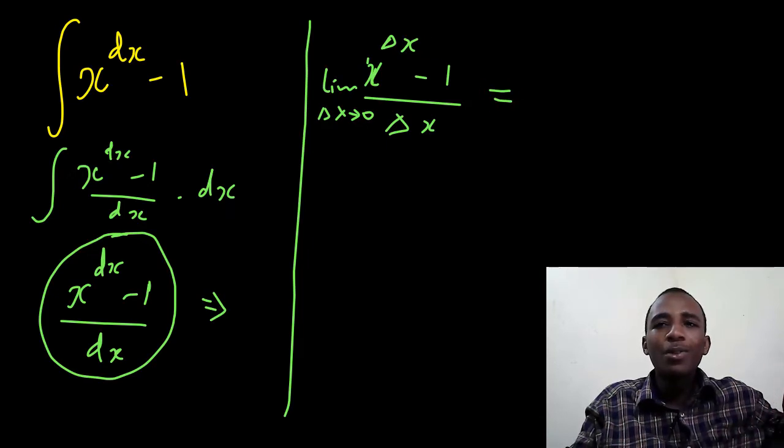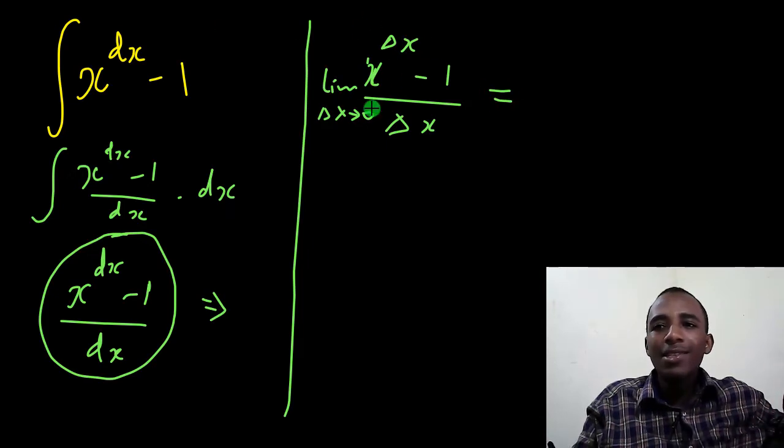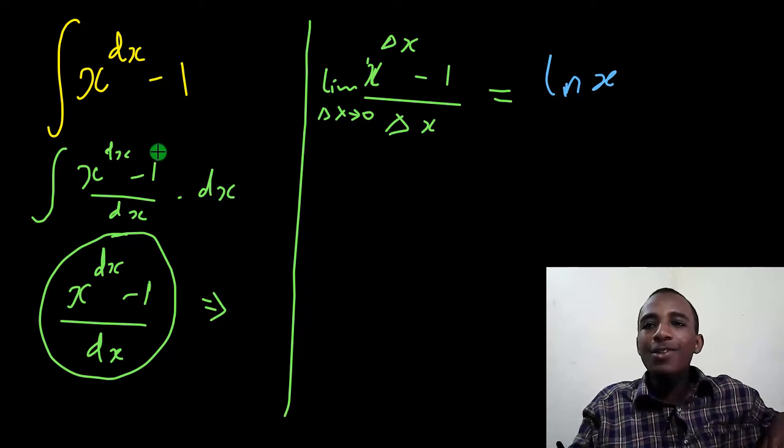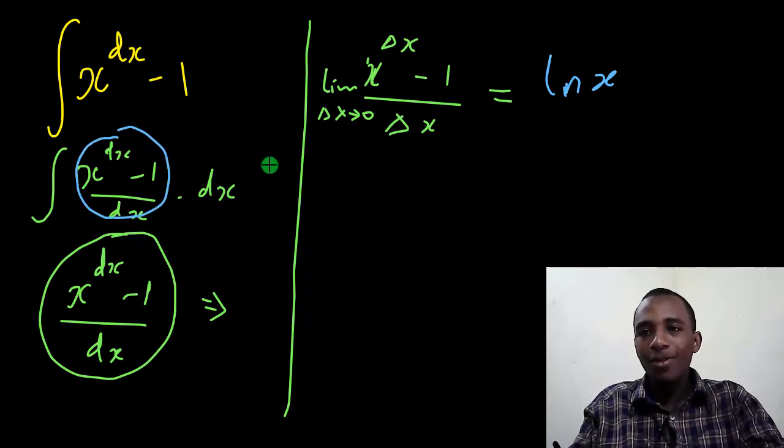And this is a very special, well-known limit. This limit of x to power delta x minus 1 over delta x as delta x tends to 0. This is the natural log of x, ln of x. So instead of writing this, I'm going to write the natural log of x.